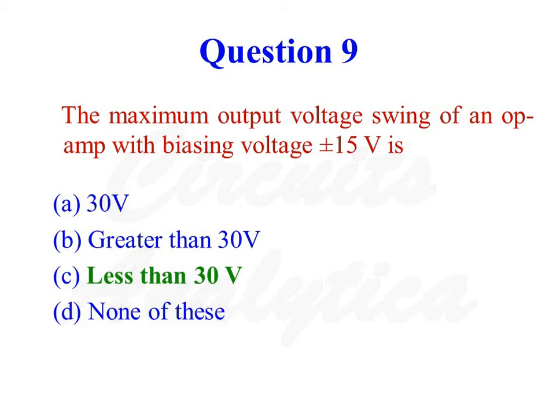For an operational amplifier, the output voltage swings between plus Vsat and minus Vsat, where Vsat is always less than Vcc, the magnitude of Vcc or magnitude of Vee. Here the value of Vcc and Vee is 15 volts. So the output voltage swing will always be less than plus 15 minus minus 15, meaning the output voltage swing is always less than 30 volts.